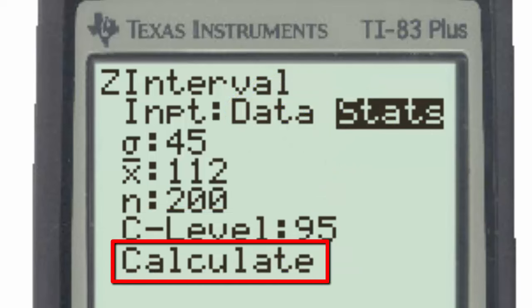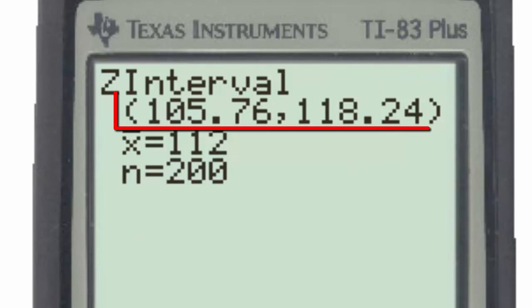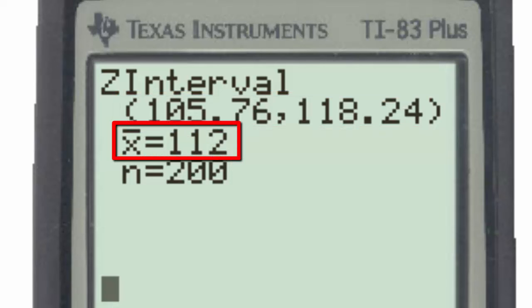Finally, going to calculate and hitting enter, we have the Z-interval, which is the 95% confidence interval estimate of the population average. We see X-bar is equal to 112, and X-bar is the point estimate, which was the average in our simple